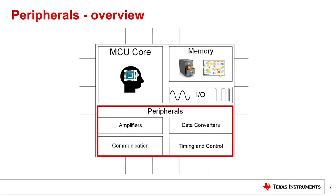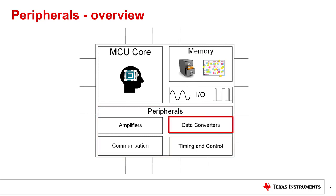The peripherals component is the most varied section of the MCU when comparing different MCUs to one another. Peripherals can differ in what's available and what features that peripheral has. In this video series, we have broken up peripherals into several subcomponents: timing and control, data converters, amplifiers, and communication.